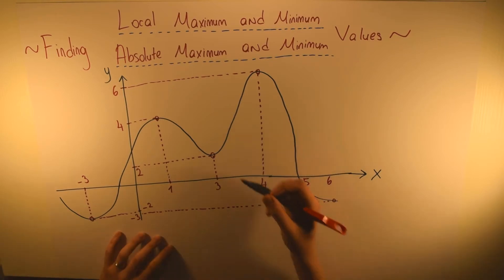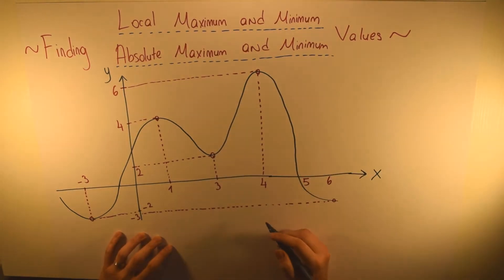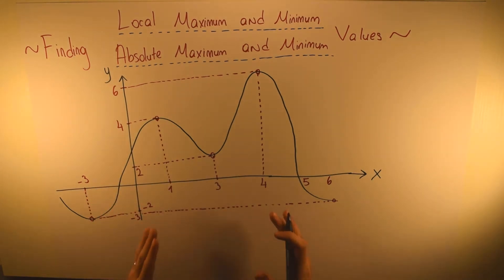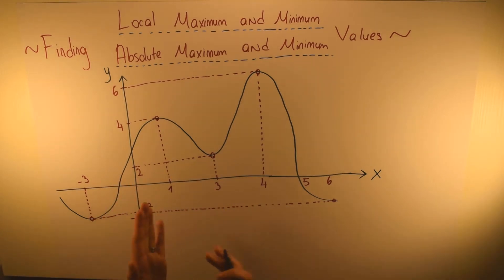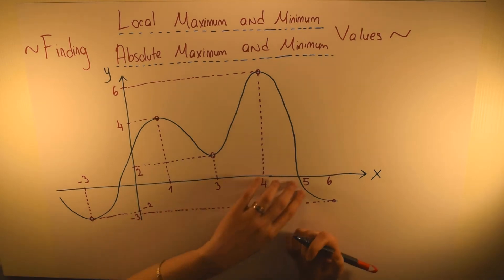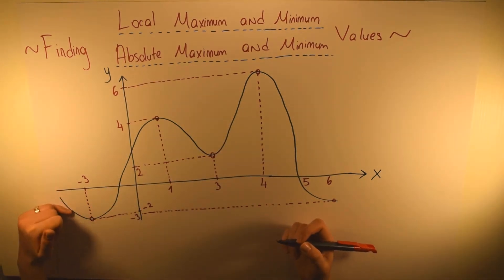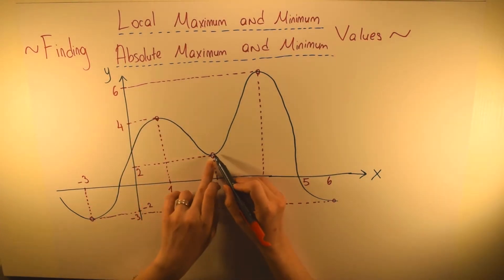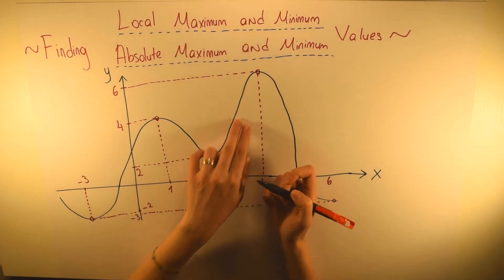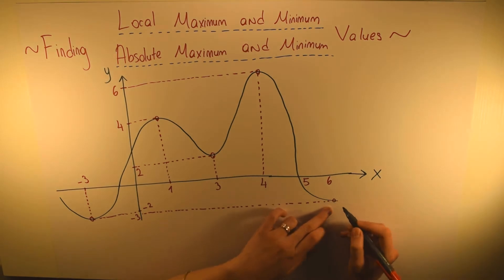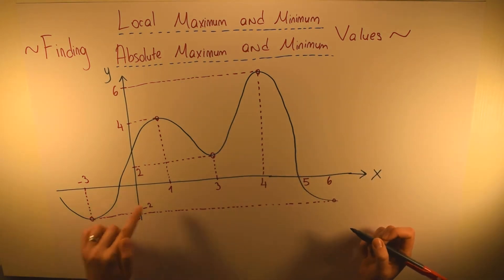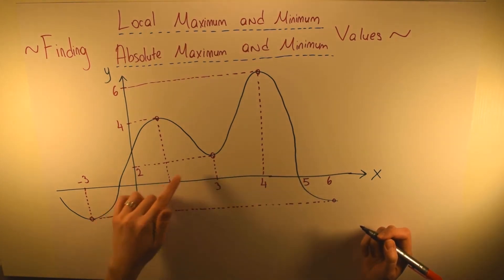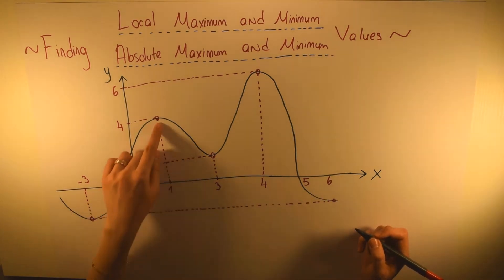Finding local maximum and minimum and absolute maximum and minimum values. At some points a function can have the highest points, and at some points it can also have the lowest points. Looking at our graph, the function goes down and has the lowest point, then goes up again. We have three lowest points here, and we call these three lowest points our local minimum values. The same logic applies to local maximum values.